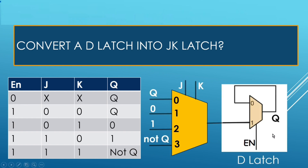This circuitry acts as a D latch, as we saw in question number 1. And this is its enable signal. Let us use the same enable signal for JK latch enable. So when this enable will be 0, output will be latched to its previous value. When enable is 1, then only it depends upon the value of J and K.